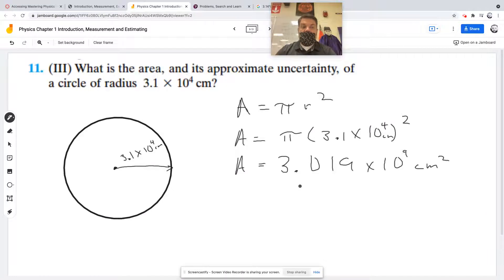Now, the uncertainty of the radius: 3.1 is the measure, plus or minus what? Which place value has the issue? The tenths. So it's plus or minus 0.1, which means plus or minus 0.1 times 10 to the 4th.